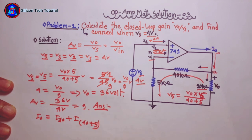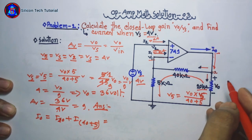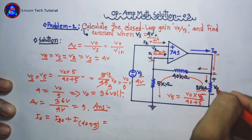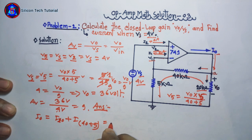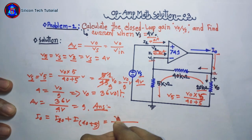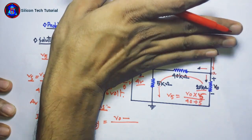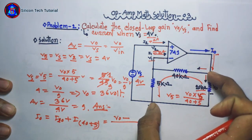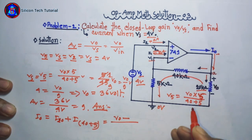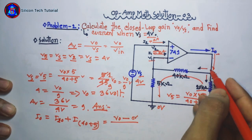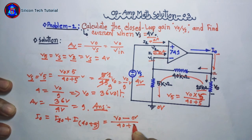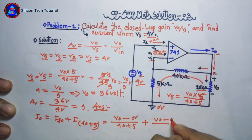Now let us apply our node analysis. Point A is output voltage 36. Output voltage minus 0V, minus 40 plus 5 plus A, output voltage minus 0V, and minus 20 - these are the node equations being applied.